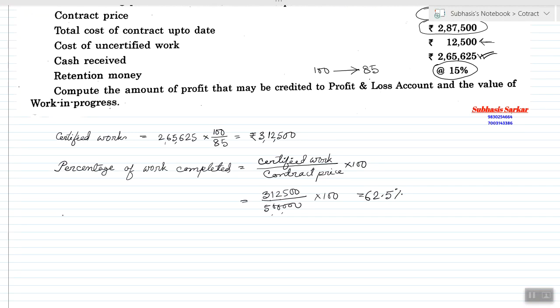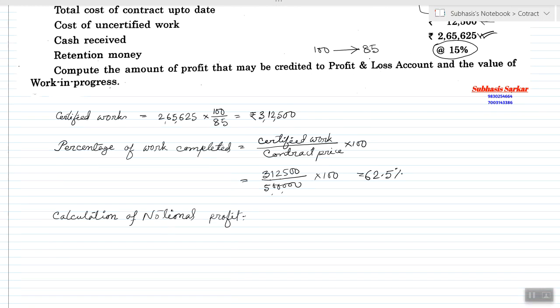Now, calculation of Notional Profit. Value of Certified Work minus cost of certified work equals notional profit.